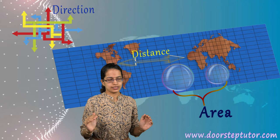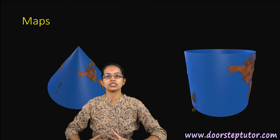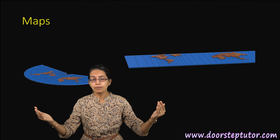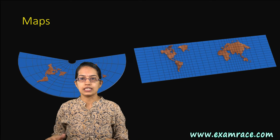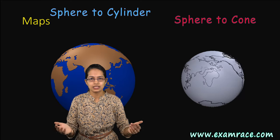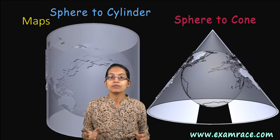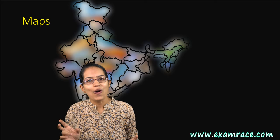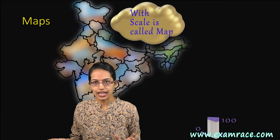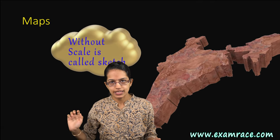All these distortions are addressed through the concept of projections, which we will understand as we move forward with our lectures. Whenever I try to cut a three-dimensional surface into a two-dimensional surface, it opens up in a certain fashion — and this is how we represent maps, the atlas that you usually see. But this map would be called a map only if it has a scale. If it is without a scale, we call it a sketch.